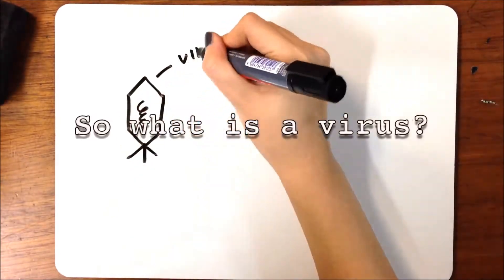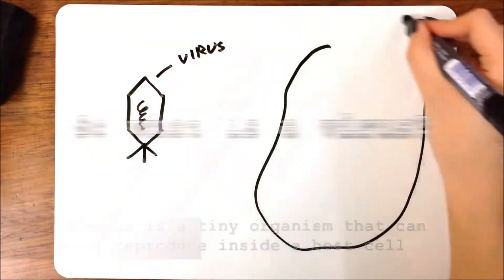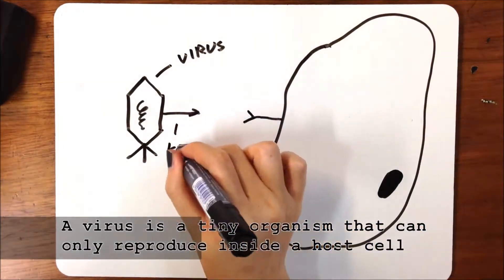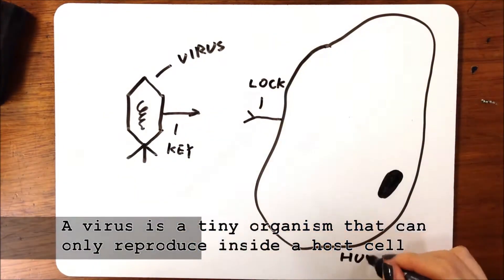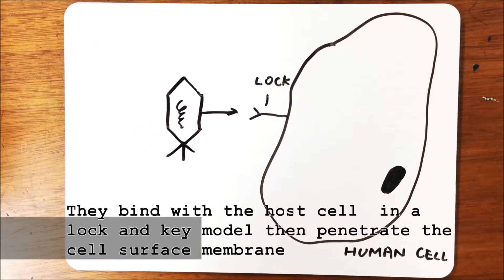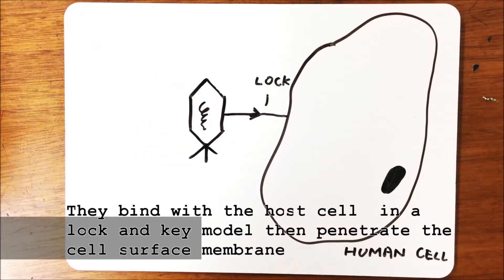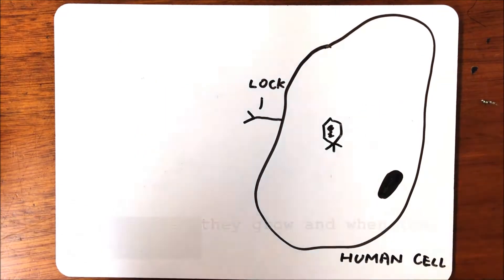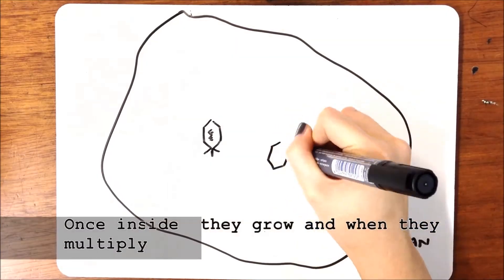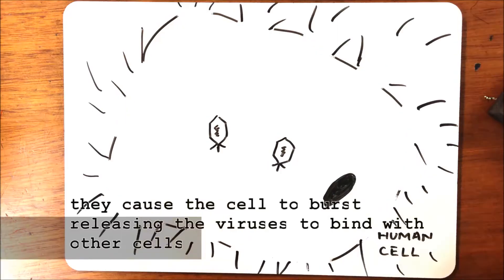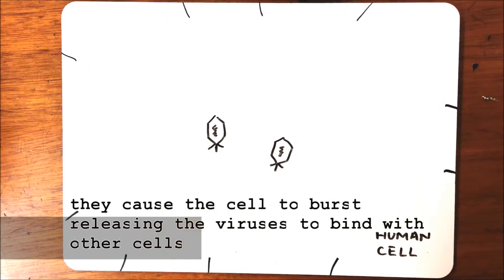So, what is a virus? A virus is a tiny organism that can only reproduce inside a host cell. They bind with the host cell in a lock and key model, then penetrate the cell's surface membrane. Once inside, they grow and when they multiply, they cause the cell to burst, releasing the viruses to bind with other cells.